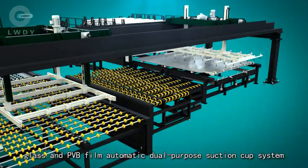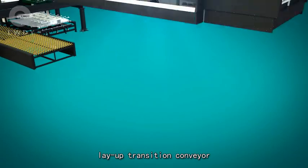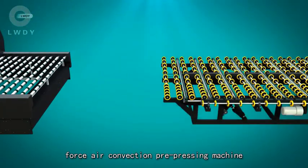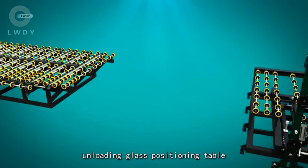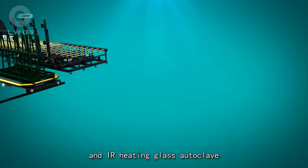The line includes glass and PVB film automatic dual-purpose suction cup system, lay-up transition conveyor, forced air convection pre-pressing machine, unloading glass positioning table, mechanical stacking and loading machine, and IR heating glass autoclave.